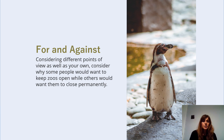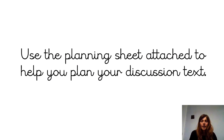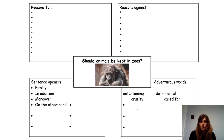So you've listened to lots of points for and against, considering different points of view as well as your own. Consider why some people would want to keep zoos open while others would want to close them permanently. I'd like you to use the planning sheet attached to help you plan your discussion text. On Seesaw you have this planning sheet. First of all plan in your home learning book and when you're ready copy up your ideas on your planning sheet and submit it on Seesaw.